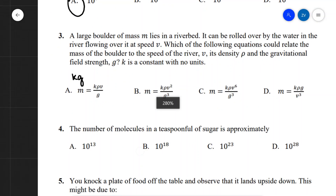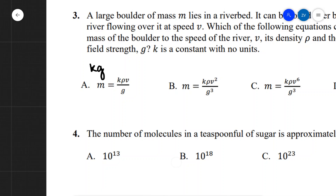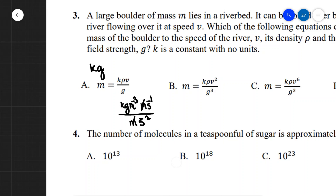For answer A, K has no units. Density has units of kilograms per cubic meter (kg m⁻³), velocity has units of m s⁻¹, and gravitational acceleration g has units of m s⁻². Combining these, we cannot cancel enough terms to isolate just kilograms, so answer A is not correct.